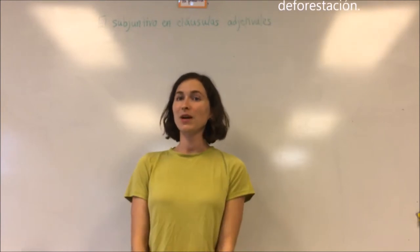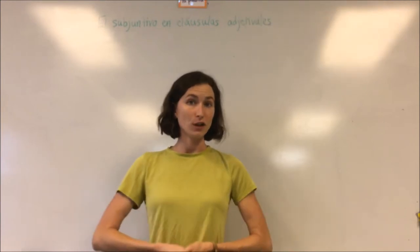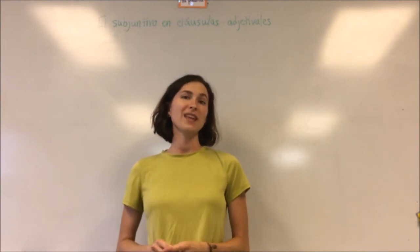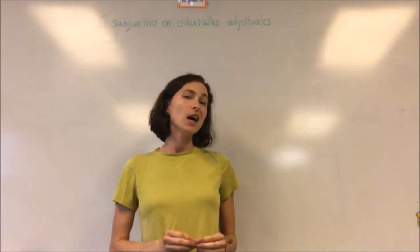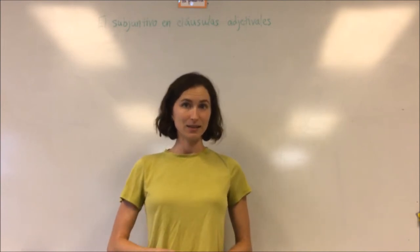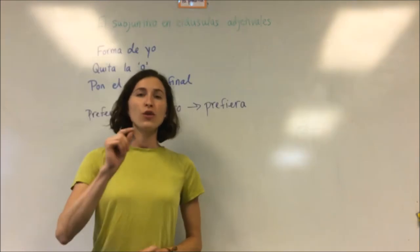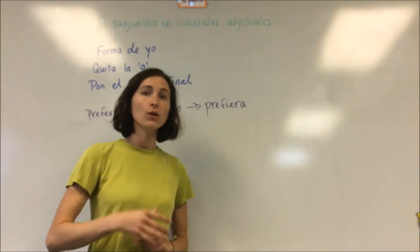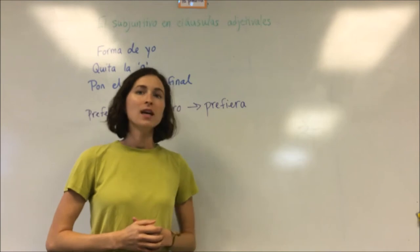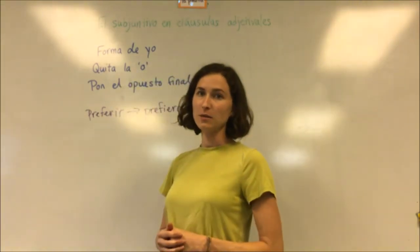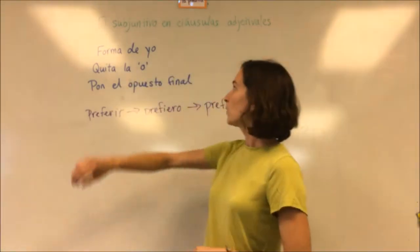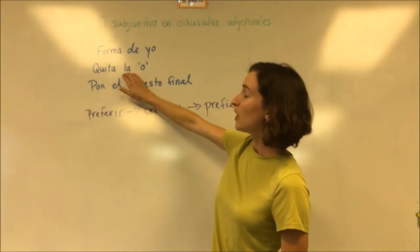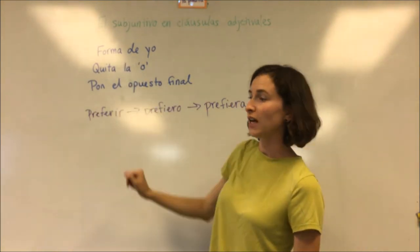Today we'll talk about the subjunctive and adjective clauses, which is when we are talking about something that we are not certain exists. Before we go into that, I want to review the rhyme that helps us conjugate in the subjunctive: we start with forma de yo, quita la o, pon el opuesto final.